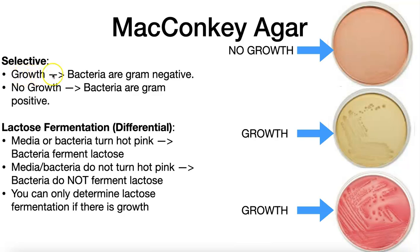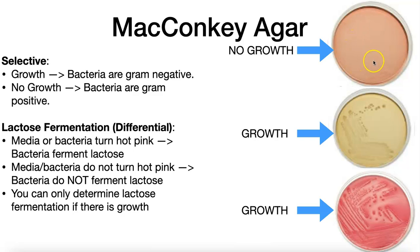If the bacteria grows, you can conclude the bacteria are gram-negative. If there's no growth and the bacteria are inhibited, that means the bacteria are gram-positive. So on these three plates, because there's no growth on the top plate, we can conclude the bacteria placed on it is gram-positive. Because there's growth on the bottom two plates, both of those bacteria are gram-negative.